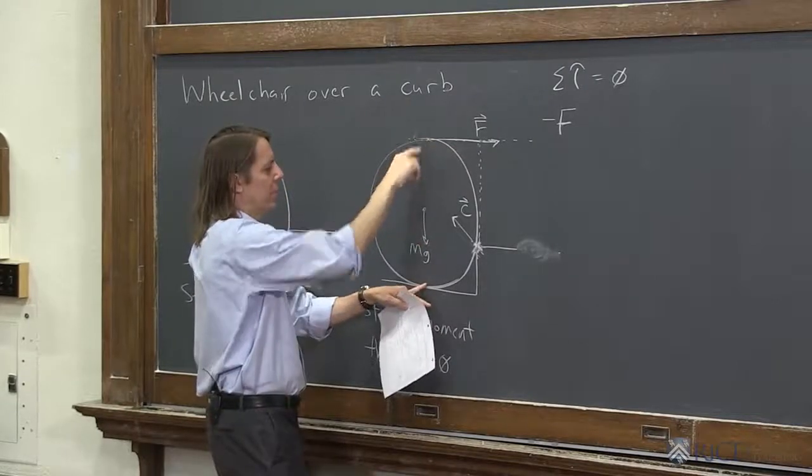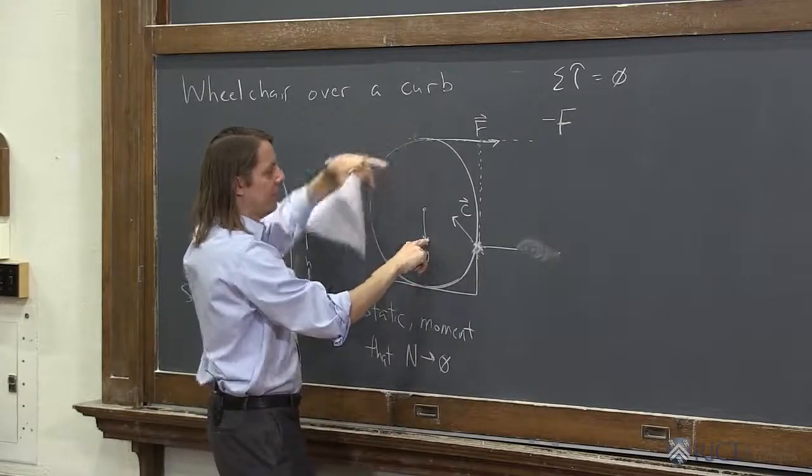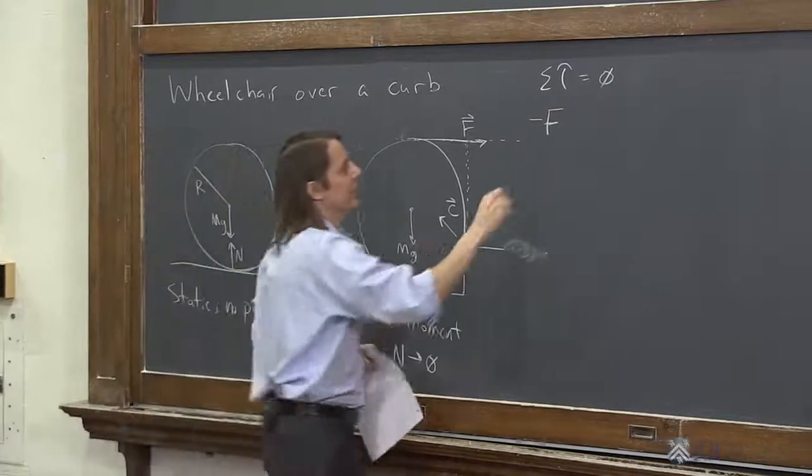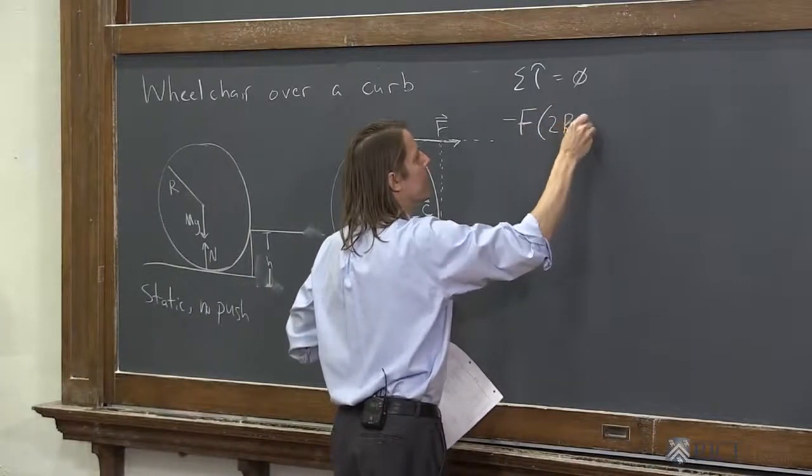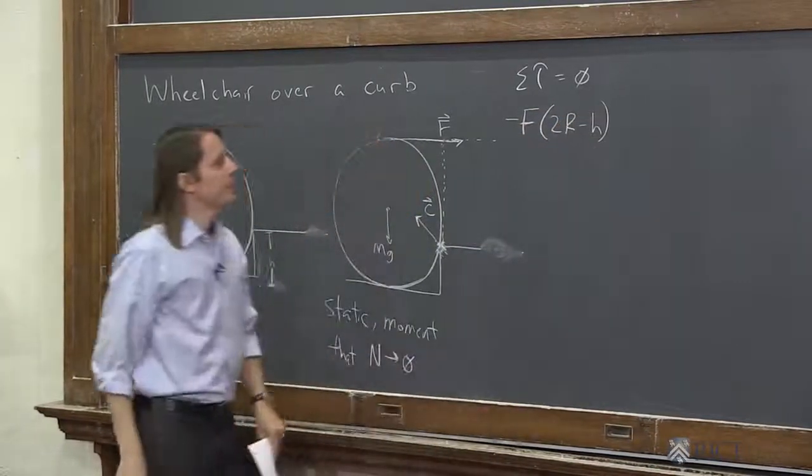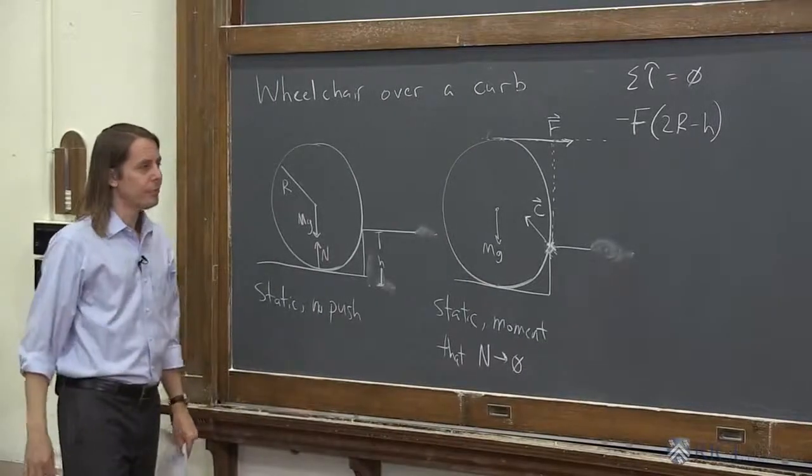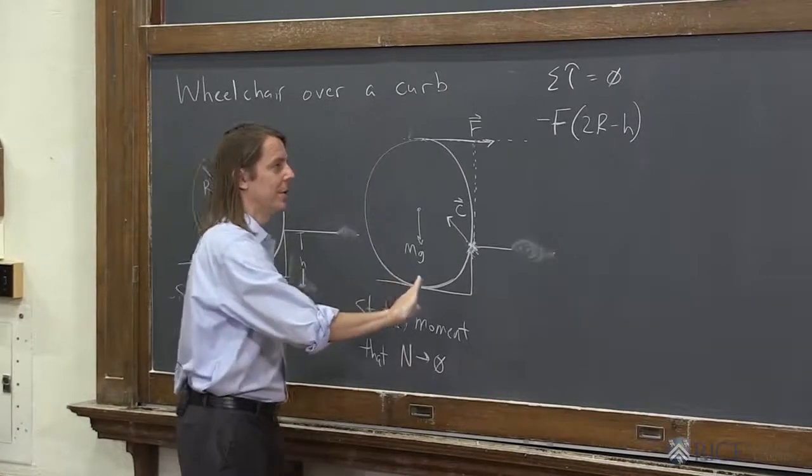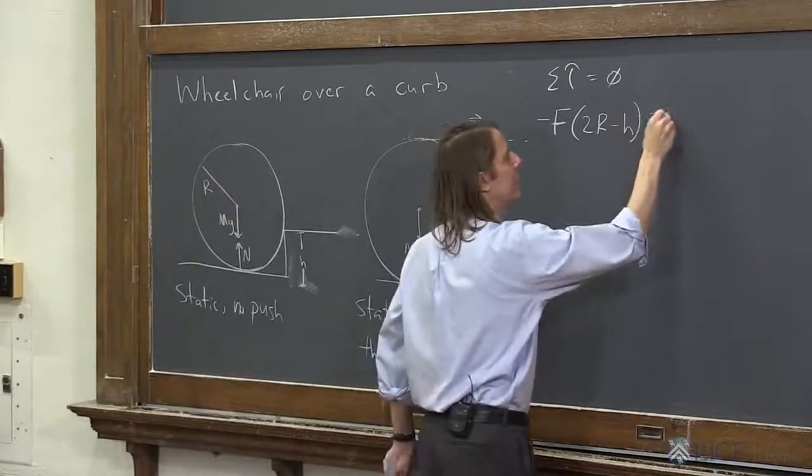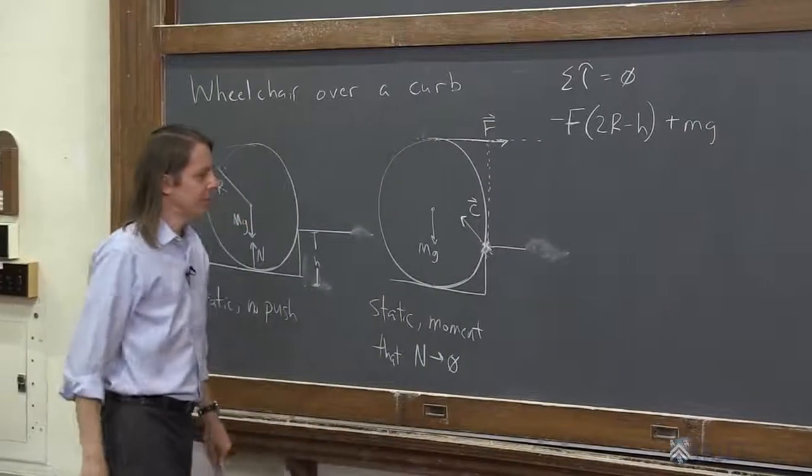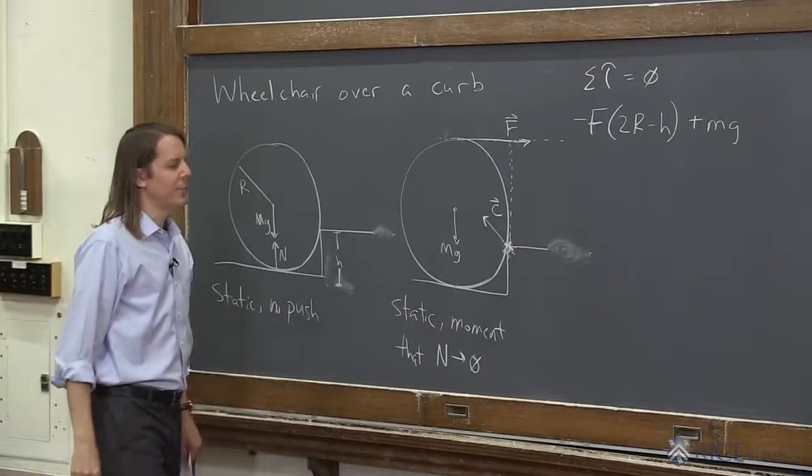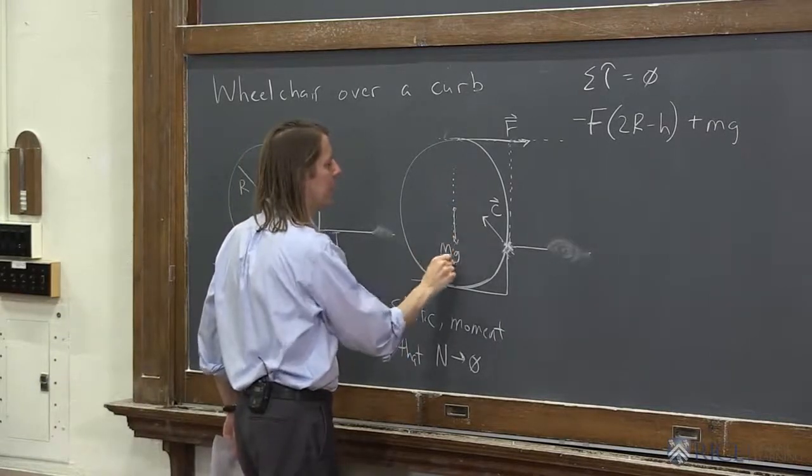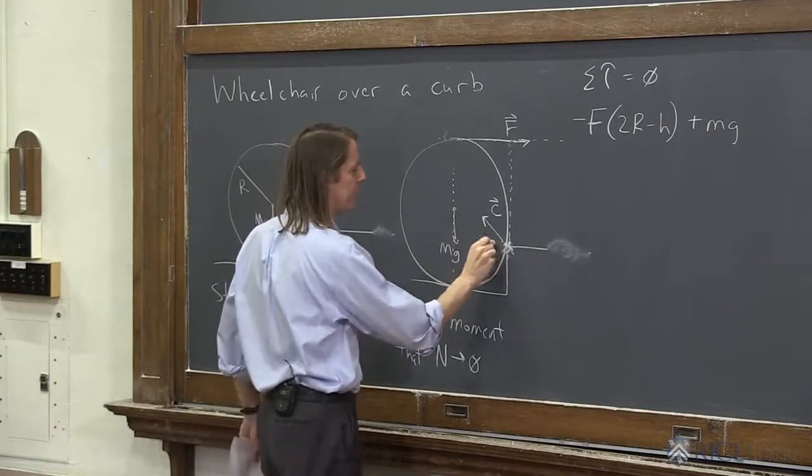So this distance we need, it's not just big R. It's 2R minus h is what's left, right? It's the diameter minus the height of the curb. So it's 2R minus h. All right, so that's the torque pushing you clockwise. Gravity is pulling you counterclockwise. So that's plus mg is the force, and now we need this one's distance, or this one's moment arm. So we can draw a line along this force and say there's the moment arm there.